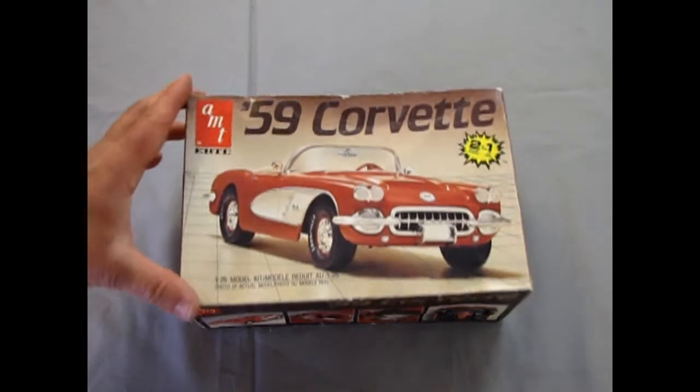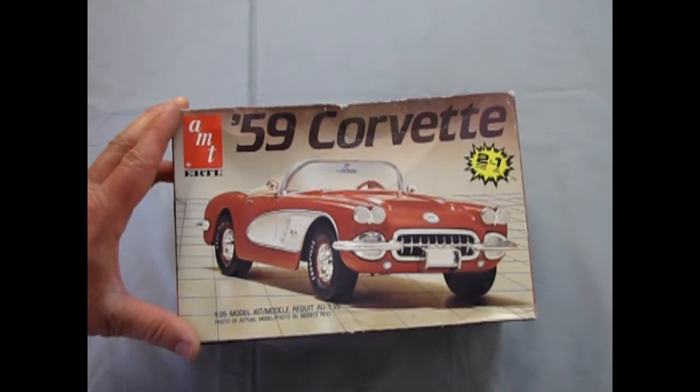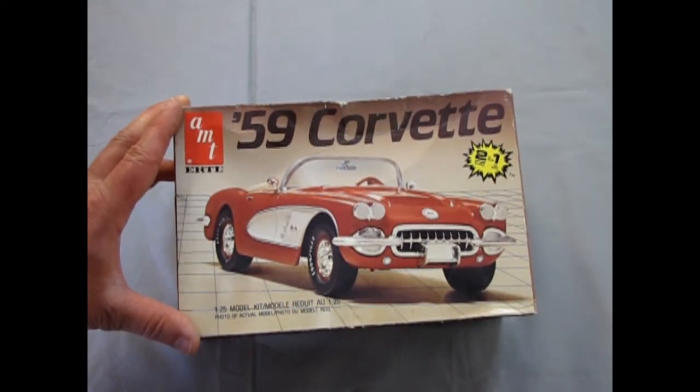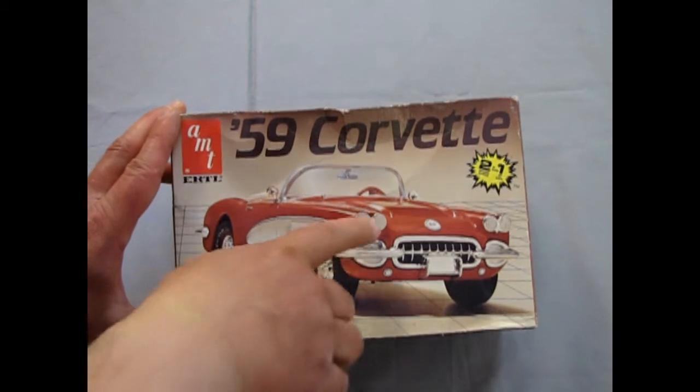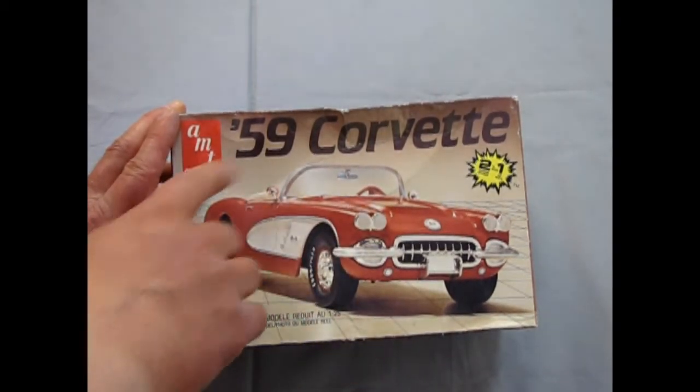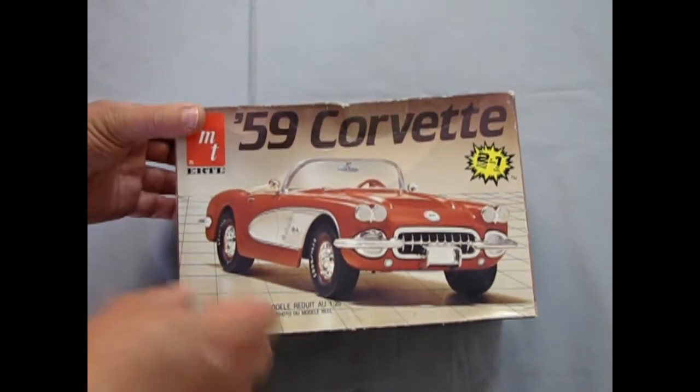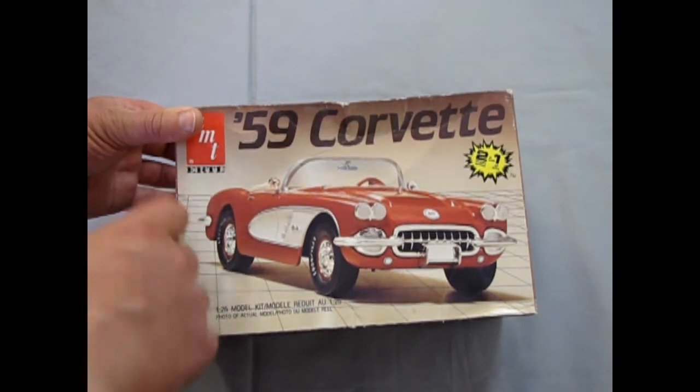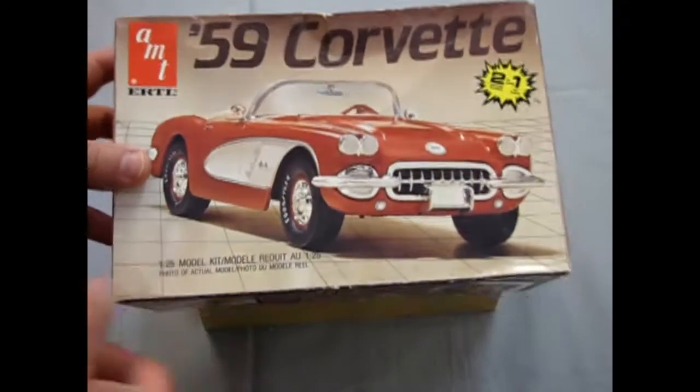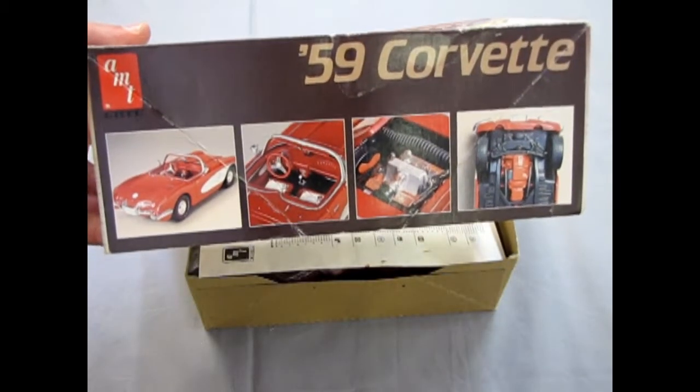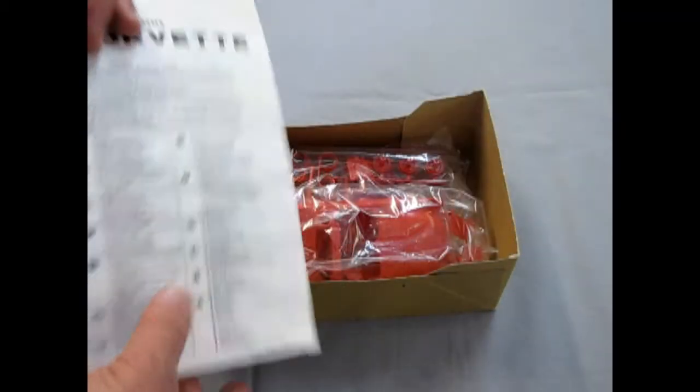Okay, let's open up the lid on this vintage kit from 1986. This is a 1959 AMT Ertl Corvette. But I do believe this has been rebranded as a 1960 because there wasn't really any change between the two. 1958 had ribs on the hood and extra chrome spears on the trunk lid. But 59 and 60, they removed those. And then 61 has the duck bill rear back to it. But at any rate, this is actually branded as a 59 and it's a 2-in-1 so you can build it as stock or custom.